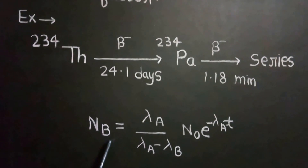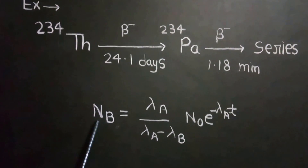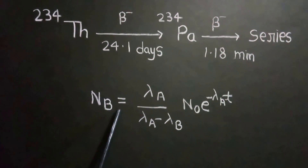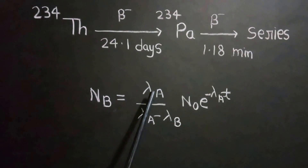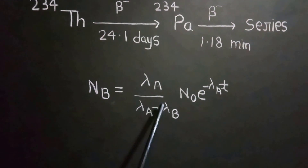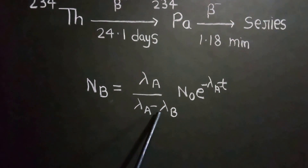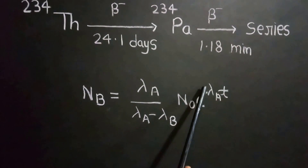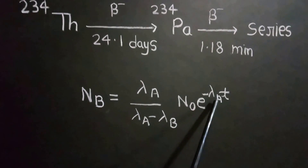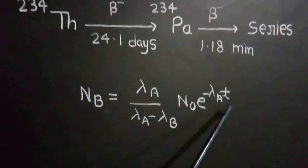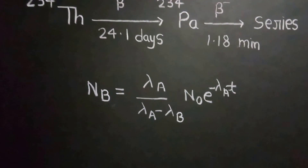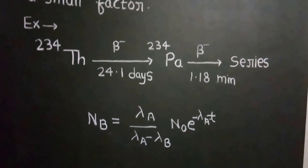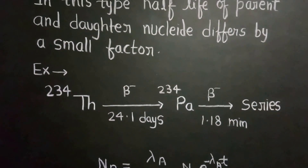For transient equilibrium, the number of atoms is given by: NB = (λA / (λA − λB)) · N₀ · e^(−λA · T). So this is all about radioactive equilibrium — secular and transient equilibrium.